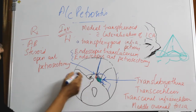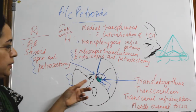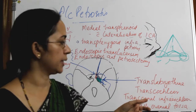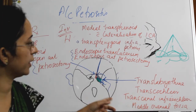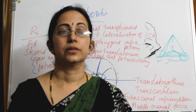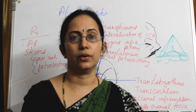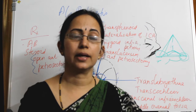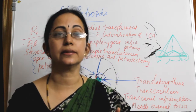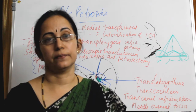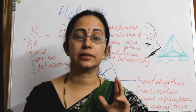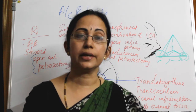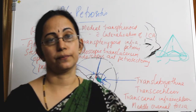One anterolateral approach is an open anterior petrosectomy. The lateral approaches are: translabyrinthine, transcochlear, transcanal intracochlear, and a middle cranial fossa approach. We decide on the route of approach based on three factors: status of hearing, localization of infection, and the type of pneumatization.